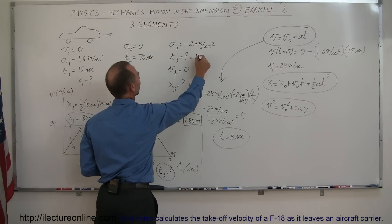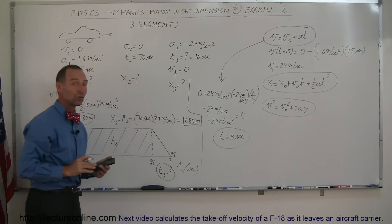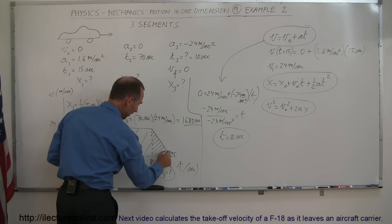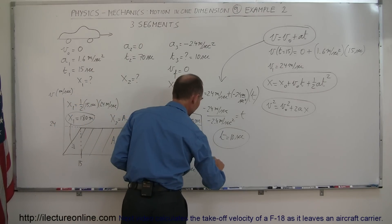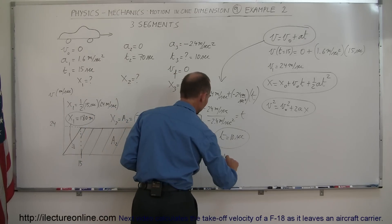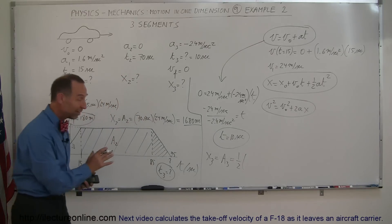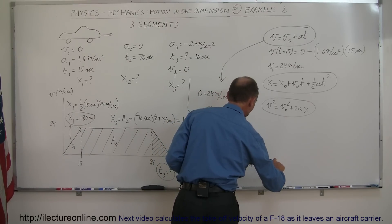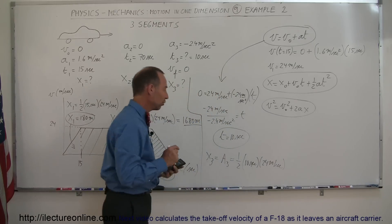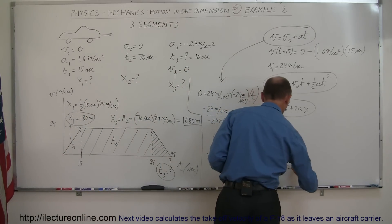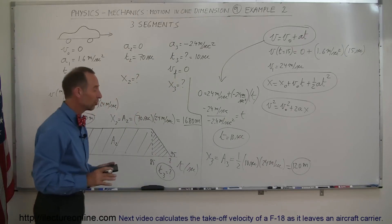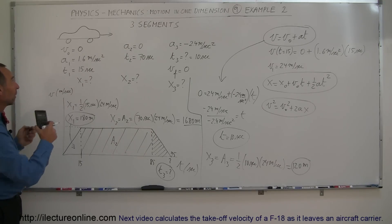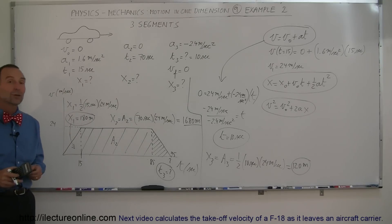Time 3 is 10 seconds. For the distance, we use the area of that triangle: X₃ equals one-half times the base of 10 seconds times the height of 24 meters per second. That's 240 divided by 2, or 120 meters. So we travel another 120 meters during the last segment of the motion. That's how we can use a graph very readily to solve problems like this, in tandem with the equations of motion.